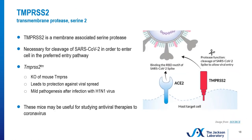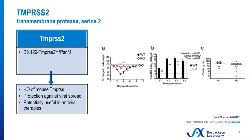TMPRSS2 is a membrane-associated protein. It's been used for studies of the H1N1 virus. This is an interesting one because proteases are a frequent target of antiviral therapies, and TMPRSS2 has a more restricted expression and less well-known function than some other host targets. TMPRSS2 is necessary for cleavage — or is at least an accessory protein — in the ACE2-dependent pathway, as it's involved in cleavage of the spike protein. In the context of H1N1, knocking out TMPRSS2 led to protection against viral spread and a milder pathogenesis after infection. You can see that data in terms of changes in body weight and viral titers, which were higher in wild-type animals.